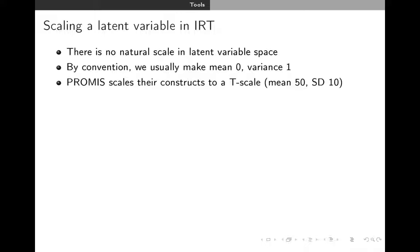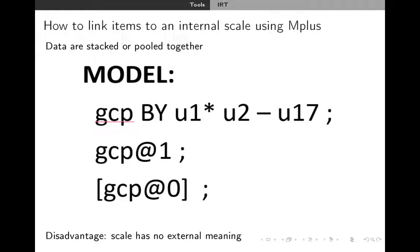I want to talk about scaling a latent variable in item response theory, because this is really important for harmonization. In latent variable space, there's no natural scale. By convention, we set the latent variable to have a mean of zero and a variance of one in our sample. In data harmonization, we're stacking datasets and might do a factor analysis of items across two datasets — so that mean of zero and variance of one has relevance internally to the combination of those studies. PROMIS scales constructs to a T-scale with a mean of 50 and standard deviation of 10. IQ is scaled with a mean of 100 and standard deviation of 15.